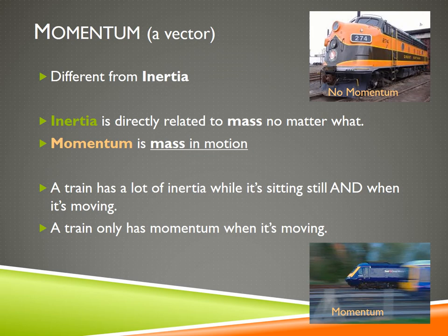The faster an object goes, the more momentum it will have. So something very small could possibly have as much momentum as something big, as long as the small object is going very fast and the big object is going very slowly.